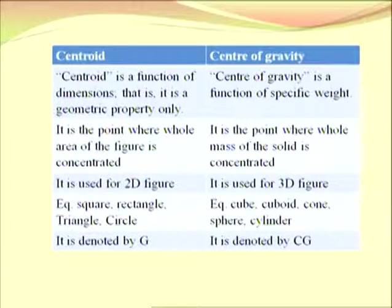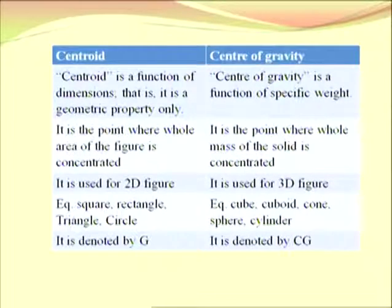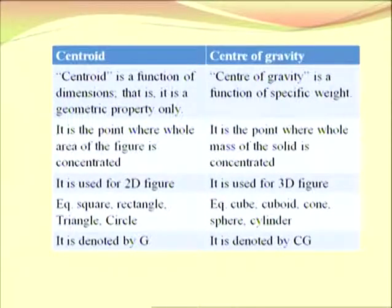We are going to revise the last two lectures on centroid and center of gravity. The centroid is a function of dimensions — it is a geometric property only. The center of gravity is the function of specific weight. In the centroid, it is a point where the whole area of the figure is concentrated, while in the center of gravity it is a point where the whole mass of the solid is concentrated. The main examples for centroid are square, rectangle, triangle, circle; and the examples for center of gravity are cube, cuboid, cone, sphere, and cylinder.